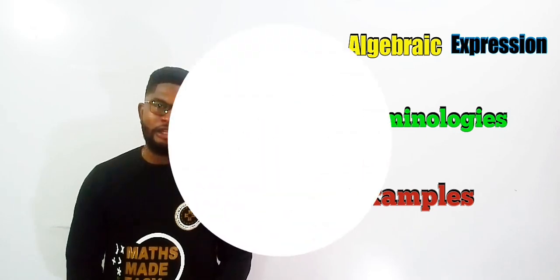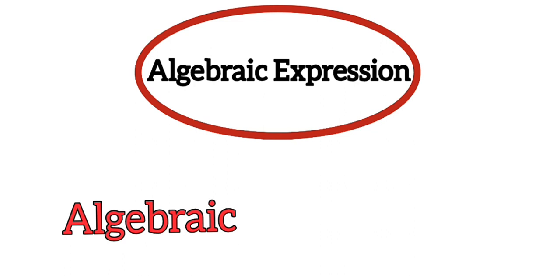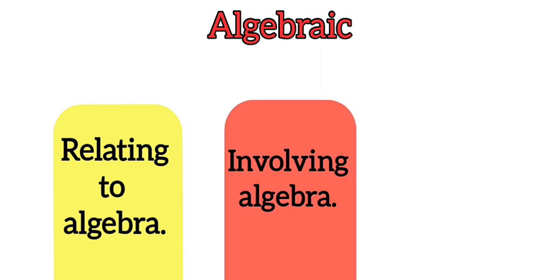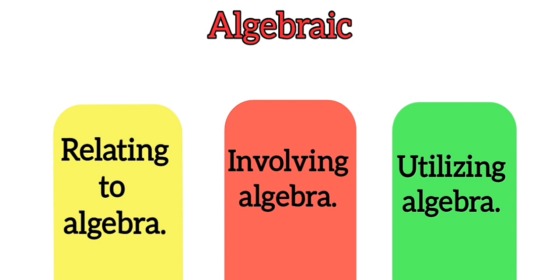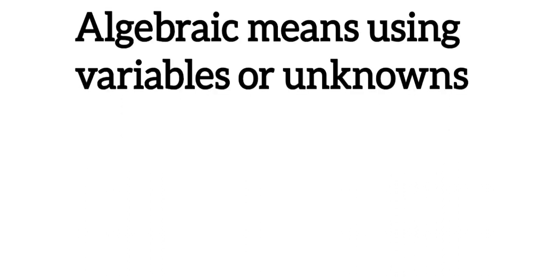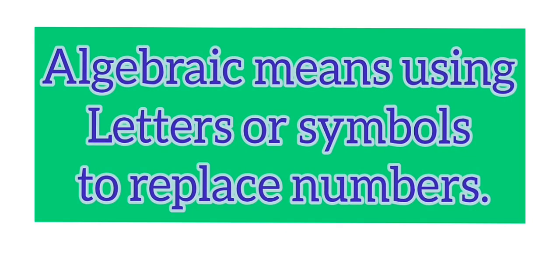Let's begin by understanding the meaning of the topic. Algebraic expression is made up of two words: algebraic and expression. The word algebraic means relating to, involving, or utilizing algebra. This means that letters or symbols are going to be used — these letters or symbols are also referred to as variables or unknowns. So algebraic simply means using variables, unknowns, letters, or symbols.